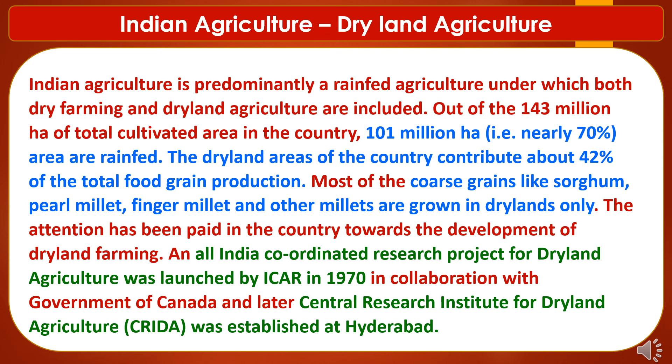Most of the coarse grains like sorghum, pearl millet, finger millet, and other millets are grown in drylands only. Attention has been paid in the country towards the development of dryland farming. The All India Coordinated Research Project for Dryland Agriculture was launched by ICAR in 1970 in collaboration with the Government of Karnataka, and later the Central Research Institute for Dryland Agriculture, CRIDA, was established in Hyderabad.